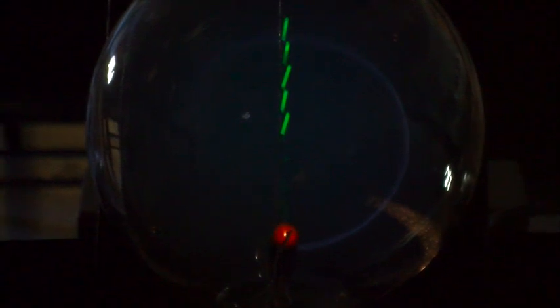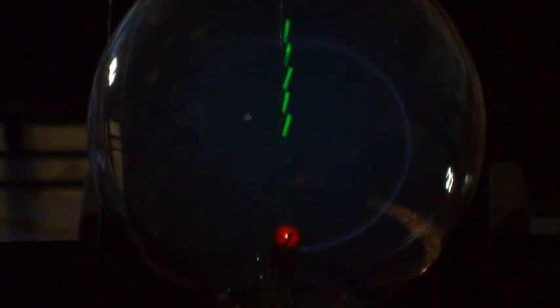Now watch the electron gun as I start increasing the filament current. Starting to get hot. And there is the electron beam. As you see, it's bent into a circle. And you can see that the pins are glowing green. That's a phosphorescence effect from the electrons hitting the fluorescent material that the pins are painted with.